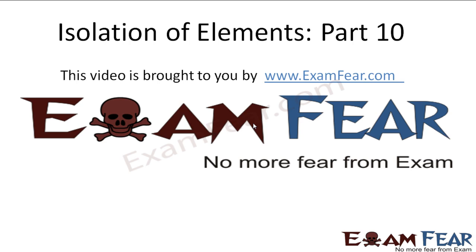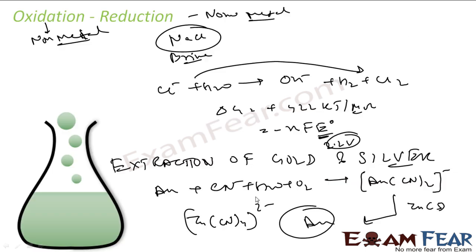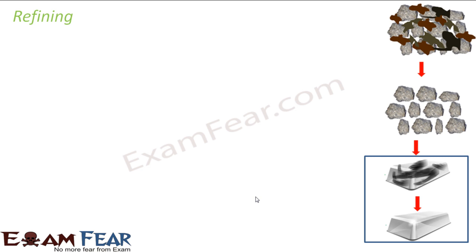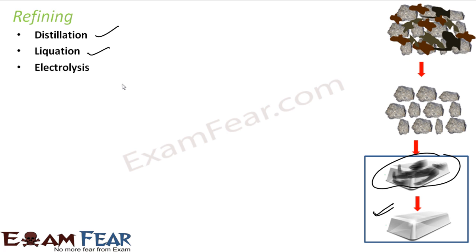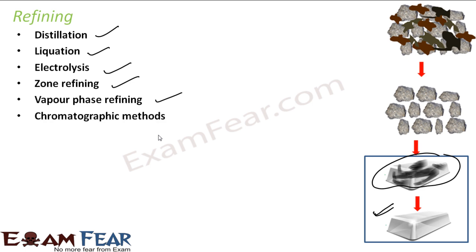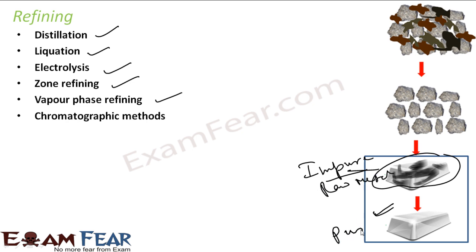This video on isolation of elements part 10 is brought to you by examfier.com. Now we'll talk about the refining of metals. Once we have the impure metal, we need to make it more pure. For this we use refining, and there are various ways: distillation, liquation, electrolysis, zone refining, vapor phase refining, and chromatographic methods. These methods are used to refine an impure or raw metal into a pure metal.